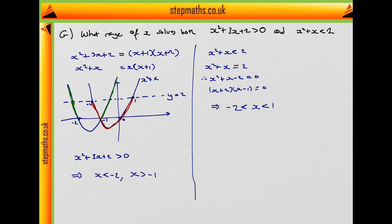What's the overlap? Sketching the number line with minus 2, minus 1, 0, and 1: the red region is minus 2 through to 1, and the other is less than minus 2 and greater than minus 1. So the overlap gives us x less than 1 and greater than minus 1, and that gives us an answer of b.